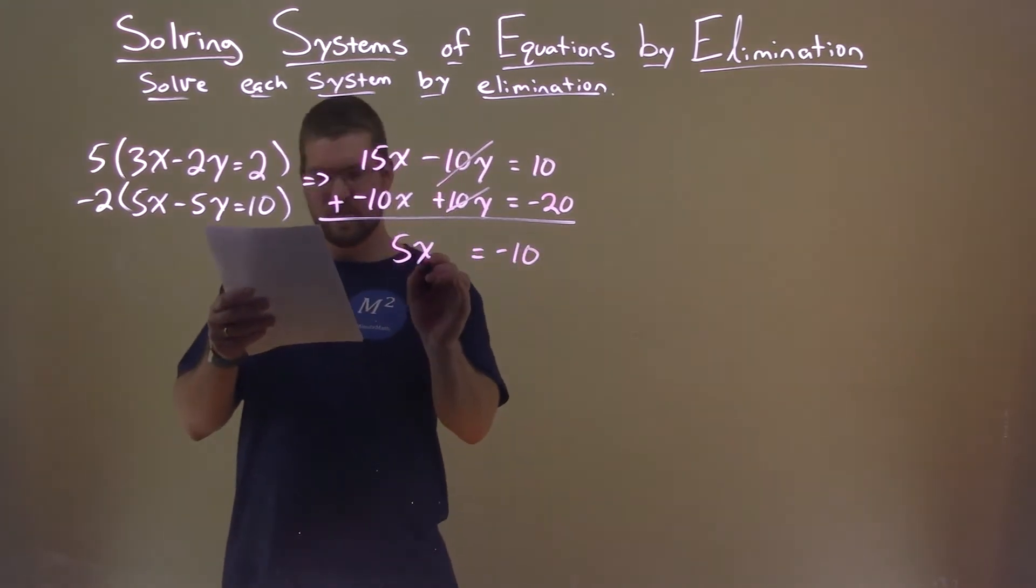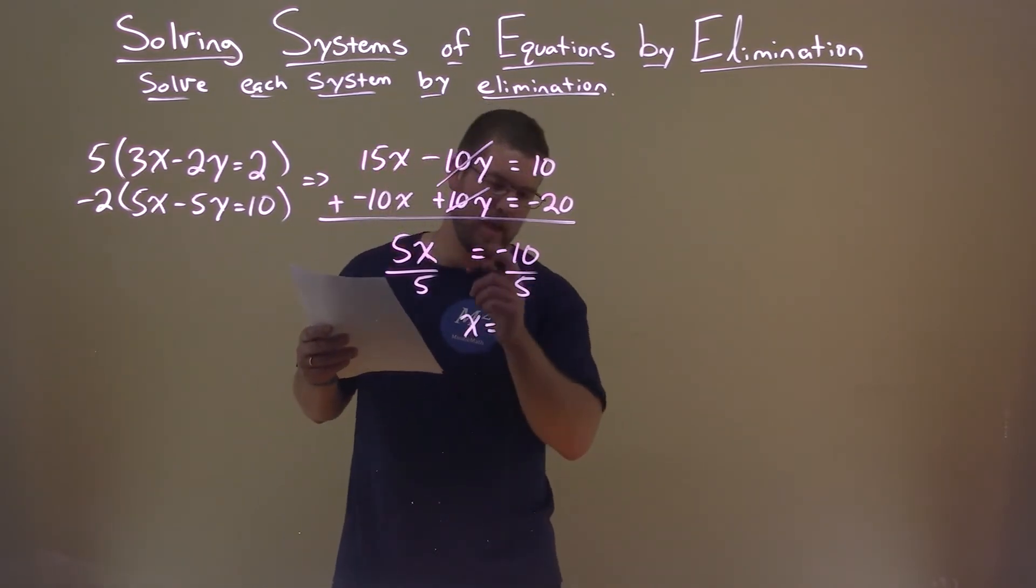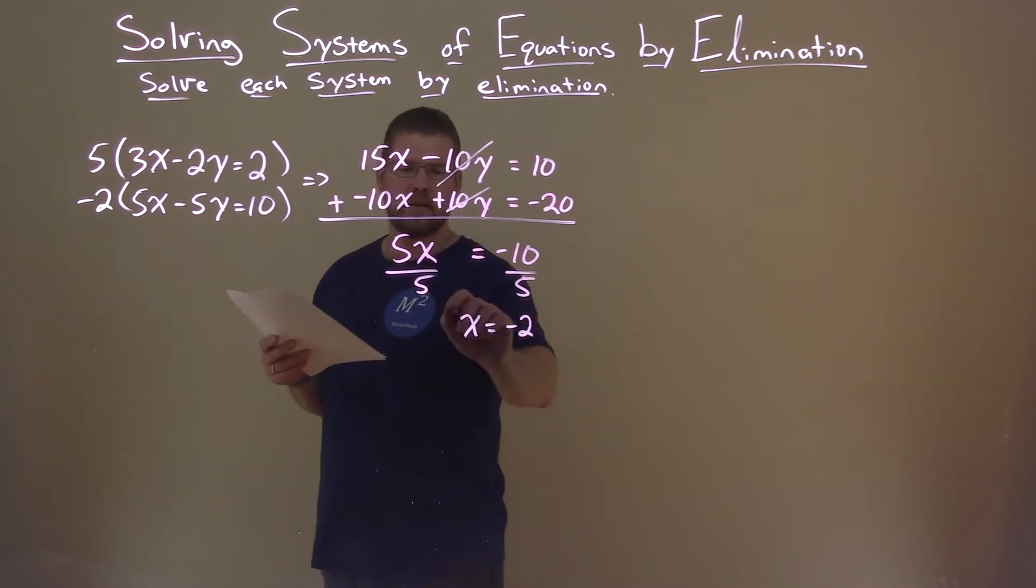Divide both sides by 5, and x is by itself. Negative 10 divided by 5 is negative 2.